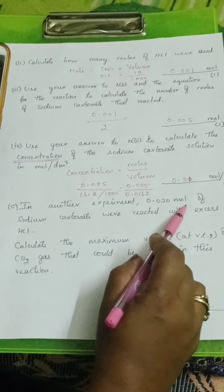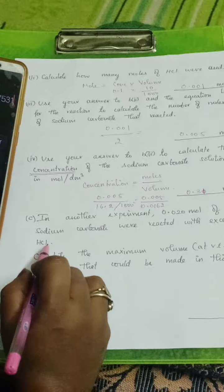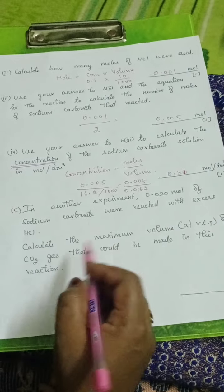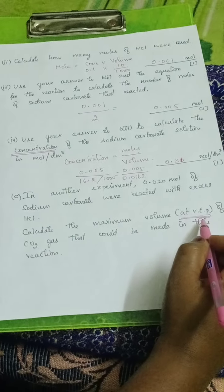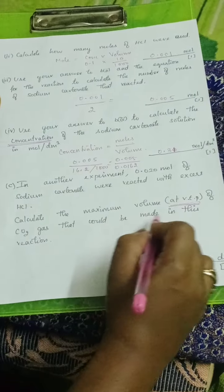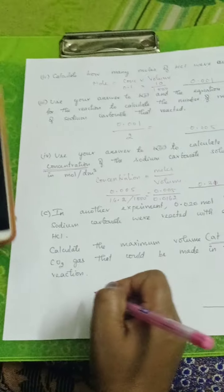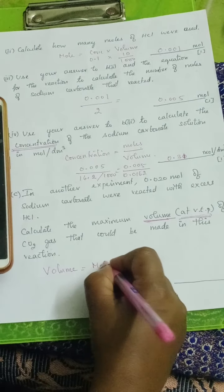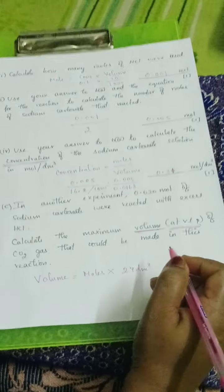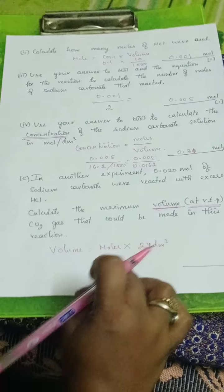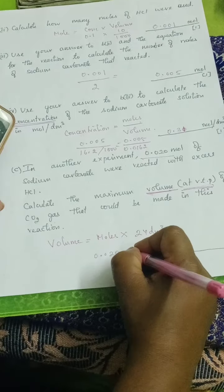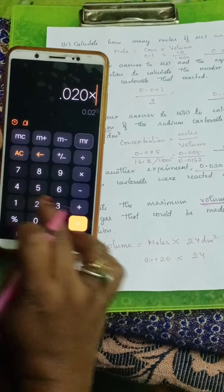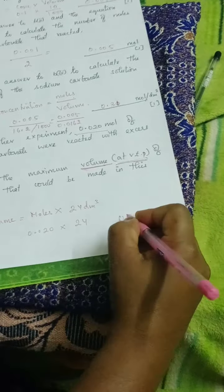In another experiment, 0.020 mole of sodium carbonate were reacted with excess HCl. Calculate the maximum volume at RTP of CO2 gas that could be made in this reaction. What is the formula for volume? Volume equals number of moles into 24 decimeter cube, the volume of 1 mole of gas. The mole is 0.020, so 0.020 into 24 equals 0.48 decimeter cube.